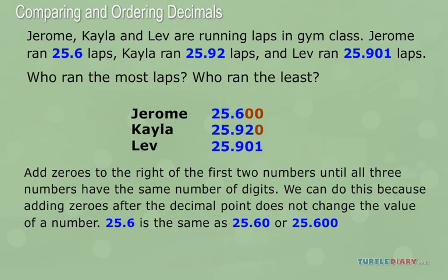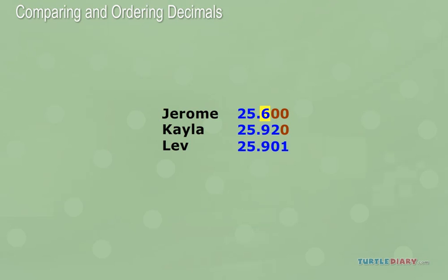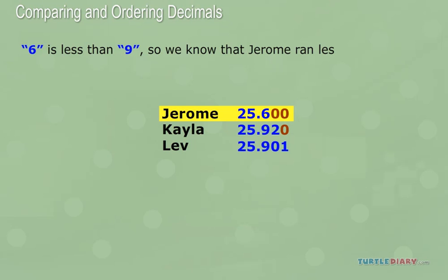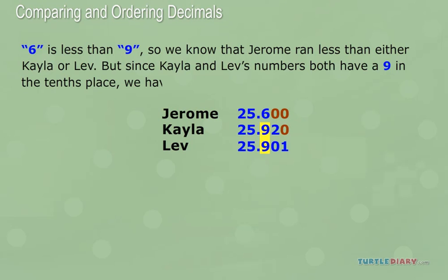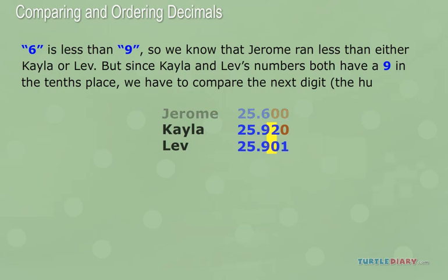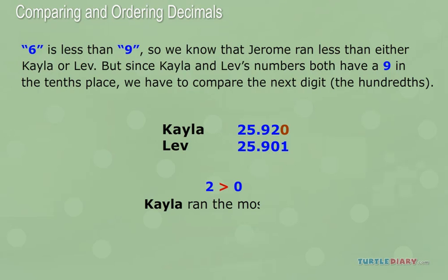Now let's compare. The first and second digits of all three numbers are the same. Let's look at the next digit, the tenths place, right after the decimal point. Six is less than nine, so we know that Jerome ran less than either Kayla or Lev. But since Kayla and Lev's numbers both have a nine in the tenths place, we have to compare the next digit, the hundredths. Two is bigger than zero, so Kayla ran the most laps, followed by Lev and then Jerome.